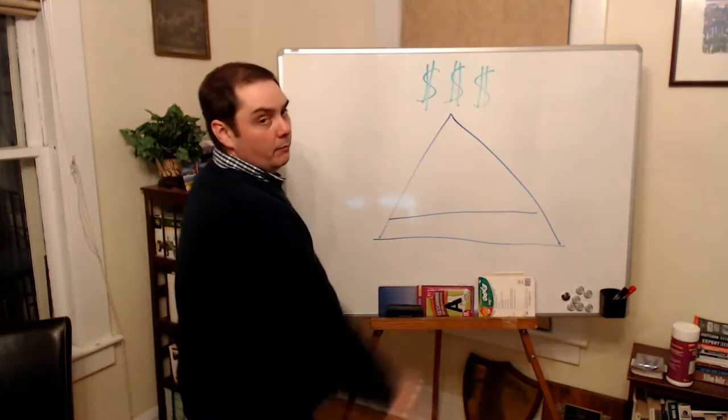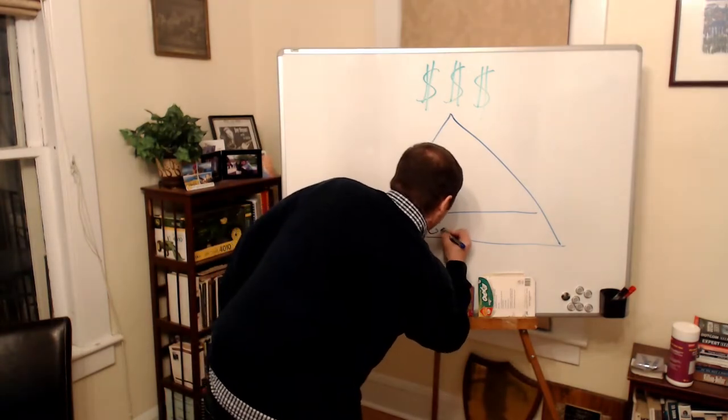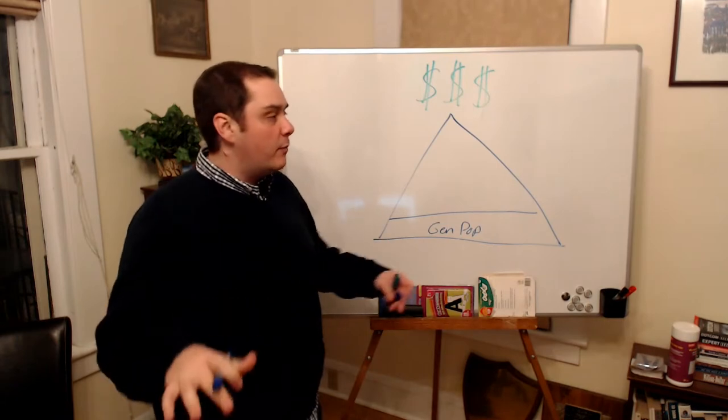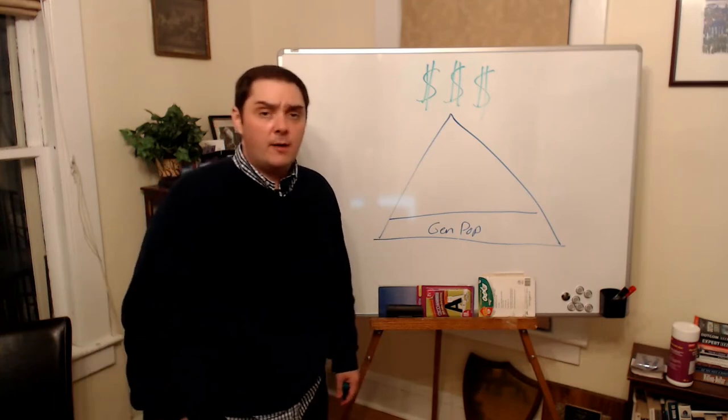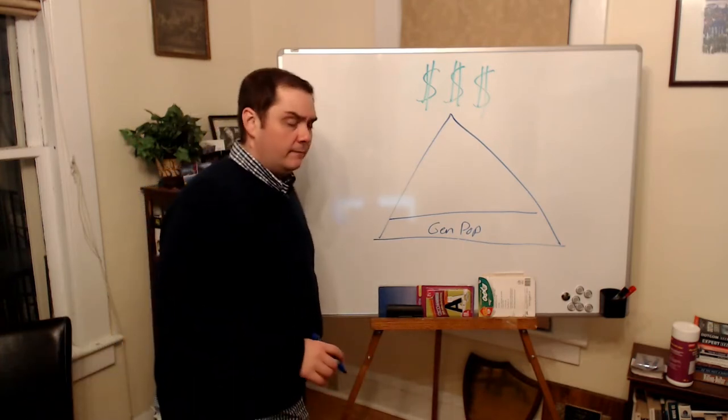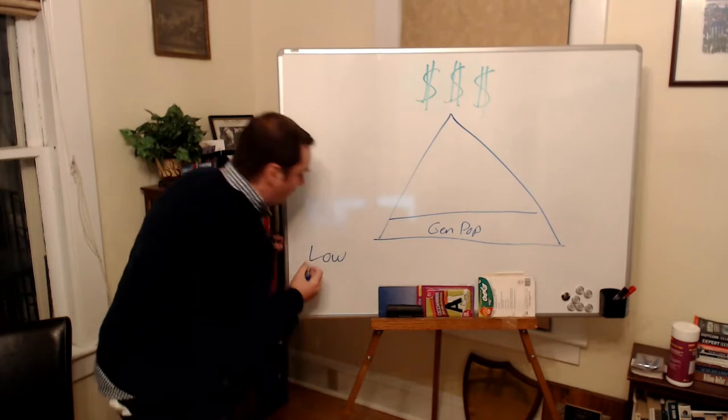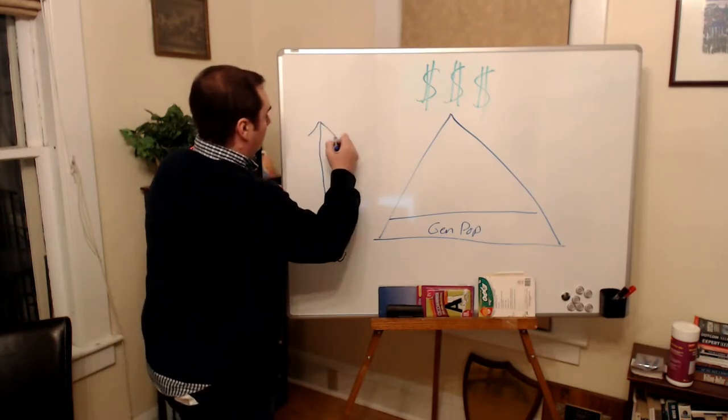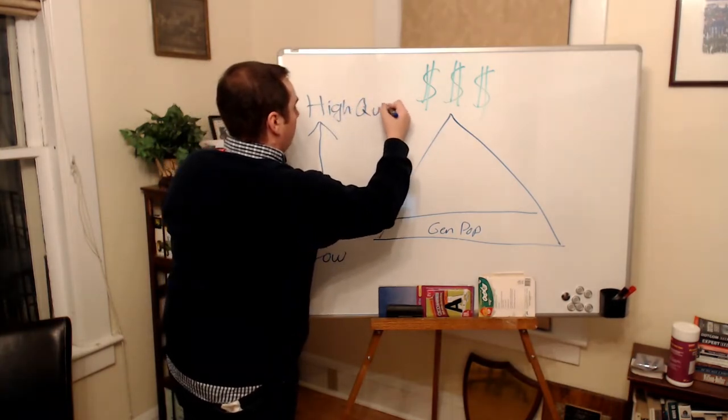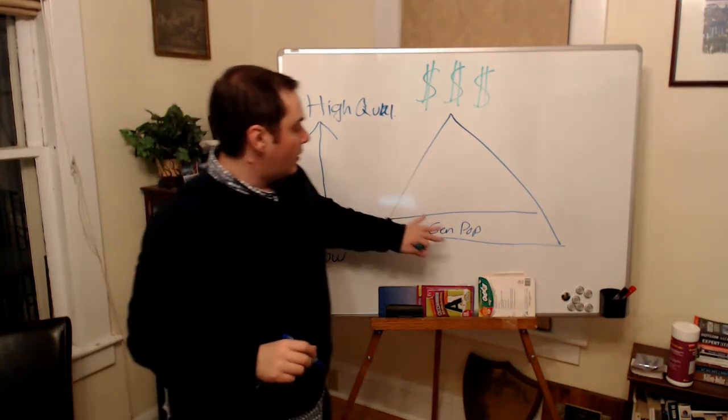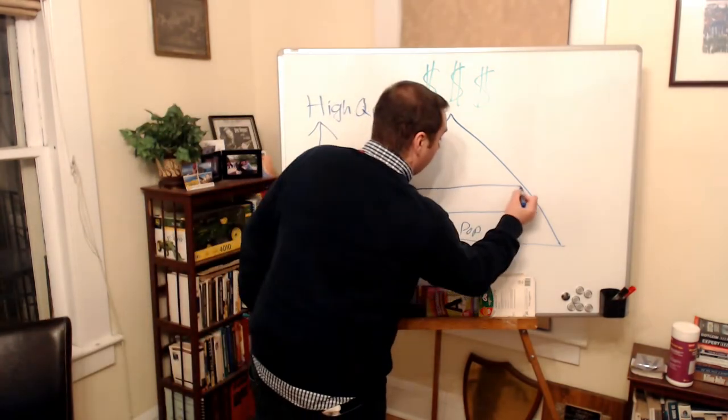Now, at the very bottom of this pyramid is the general population. So, we're going to say, this is Gen Pop. It is everybody out there who may or may not know you. They probably don't. They have no idea why they should work with you. And you're in competition with all of the other agents that might be in your market. Now, that is a super low quality here. And we're going to bring that up and talk about high quality at the top. So, general population, very bottom of that pyramid. The next thing we're going to do here is draw the next one up.